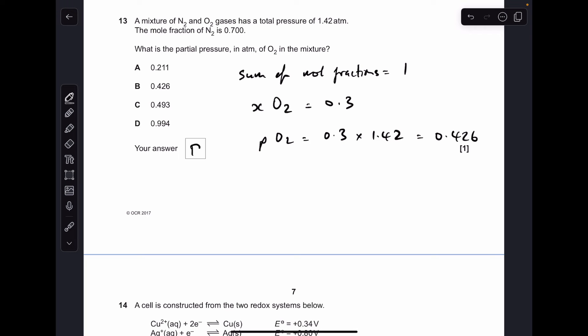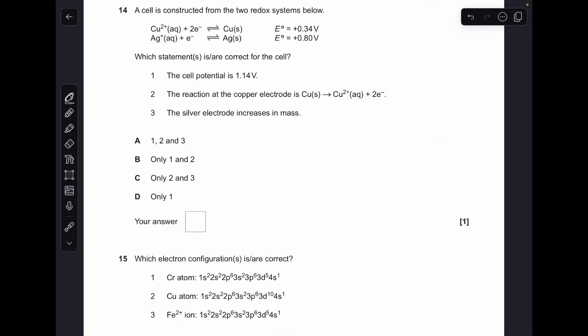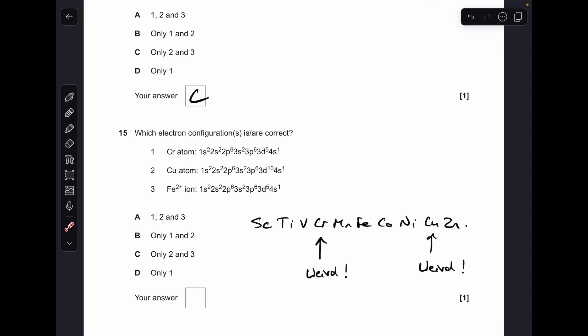Question 14, the cell potential is 1.14 volts. Let's see if it is, so it's most positive minus least, 0.8 minus 0.34, that's not going to give 1.14 volts so that's wrong. Statement two the reaction at the copper electrode, let's have a look at the copper electrode, it's got the least positive electrode potential so its half equation would run that way, copper goes into two electrons and copper 2+, yep that's right. And statement three the silver electrode increases in mass, well the silver electrode has the most positive electrode potential so it will run in the forwards direction and produce silver so yes it will increase in mass. So statements two and three were correct, C is the answer.